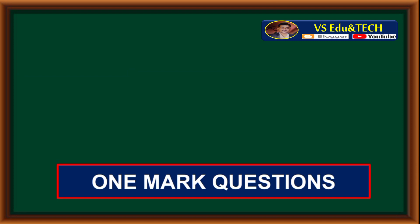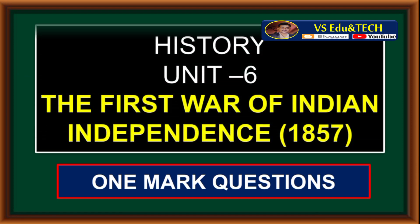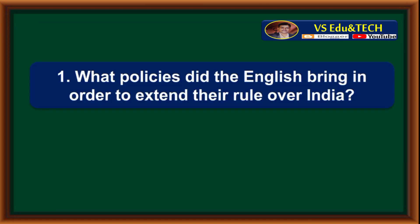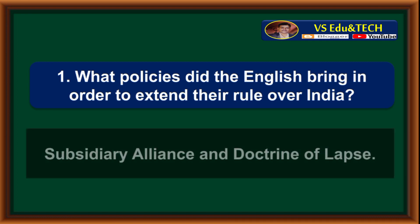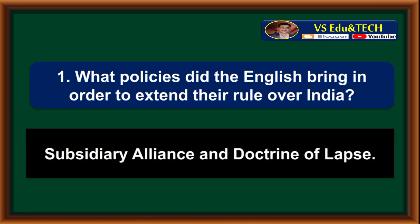10th standard Social Science, one-mark questions. History Unit 6: The First War of Indian Independence. Question 7: What policies did the English bring in order to extend their rule over India? Answer: Subsidiary Alliance and Doctrine of Lapse.